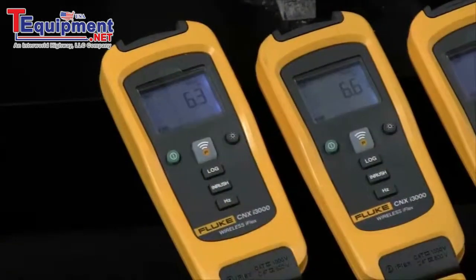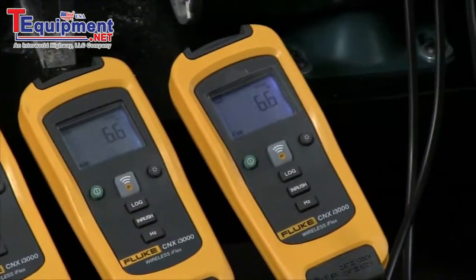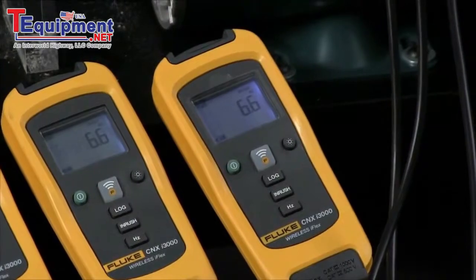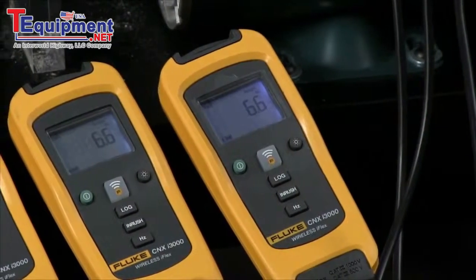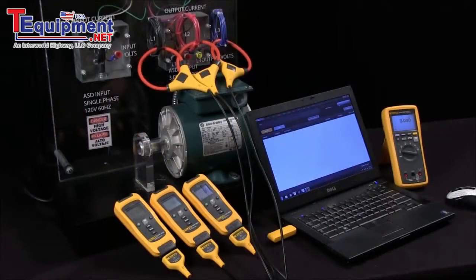One would be to read directly off the screens you see on each of the i3000 iFlex modules. We were reading the current reading on there: 6.4 amps, 6.6, and 6.6. These are on the respective phases L1, L2, and L3.